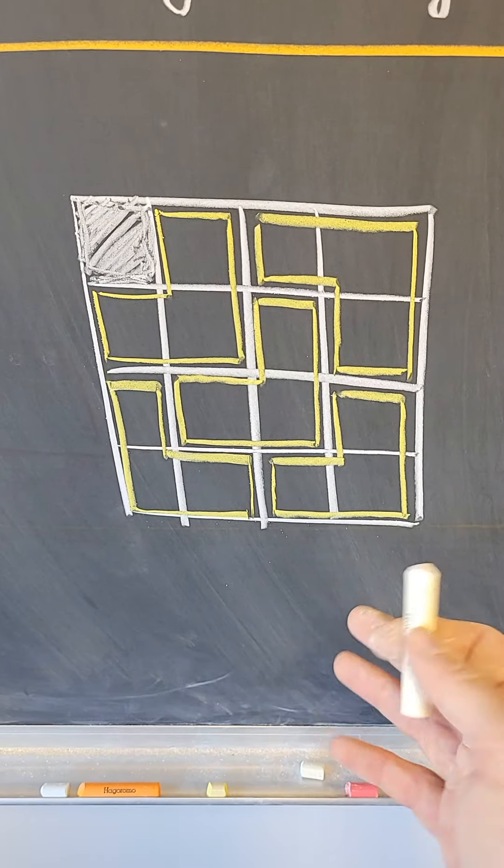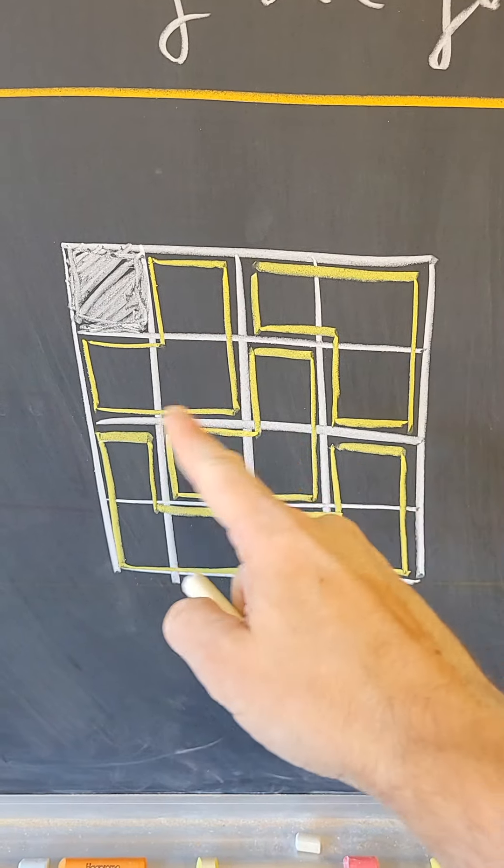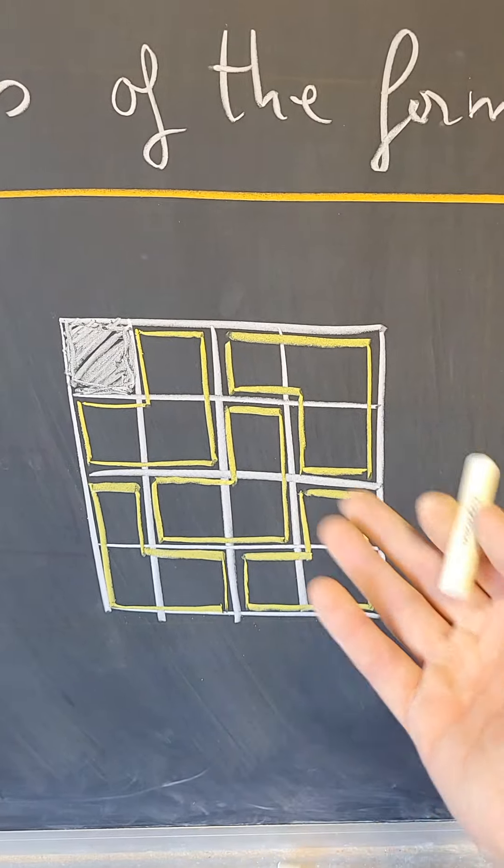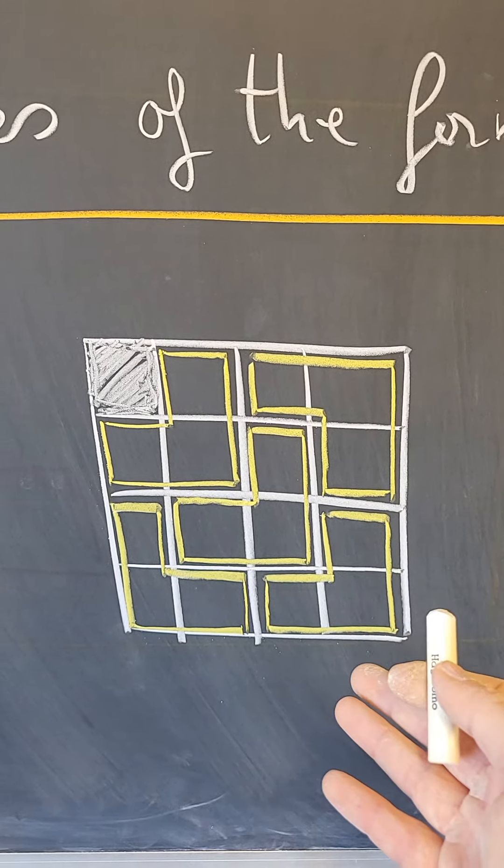So here is one solution where I've tiled this four by four chessboard with those pieces of that shape. So now the question is, can an eight by eight or 16 by 16 be tiled in this way?